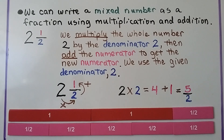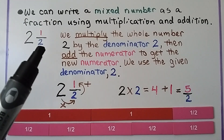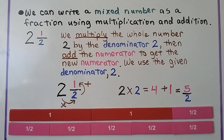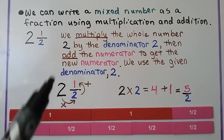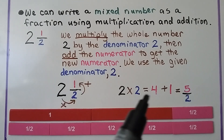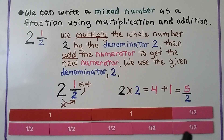We can write a mixed number as a fraction using multiplication and addition. For two and a half, we multiply the whole number two by the denominator two, then add the numerator to get the new numerator, and use the given denominator two. Going counterclockwise: two times two is four, plus one more is five. That's our new numerator over the denominator two — we have five halves. We need five half-size parts to equal two and a half.